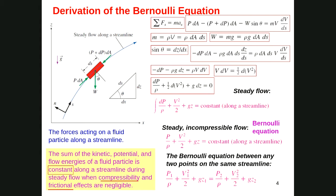A student asks: does streamwise acceleration mean both tangential and normal components, or only tangential? The answer is that this derivation is only for the streamwise component — we are not considering the normal component here. When we consider the normal component, the equation becomes a little different, as will be shown later. For now, we only consider the streamwise component, which is what we normally apply for Bernoulli equation to streamline conditions.